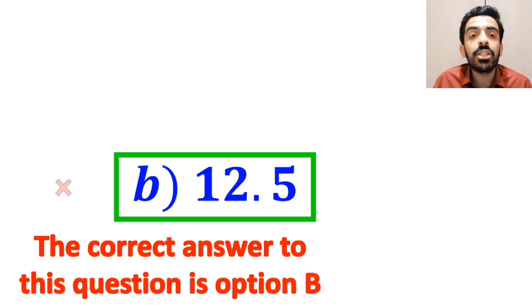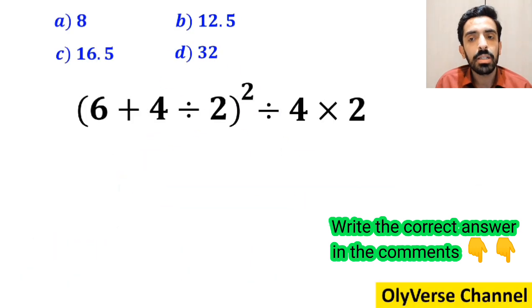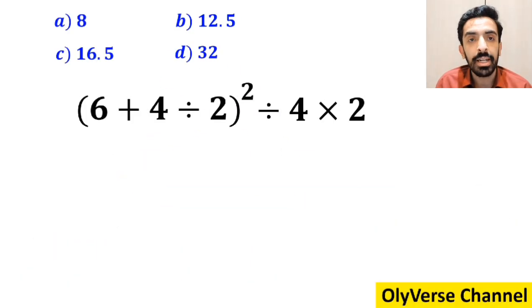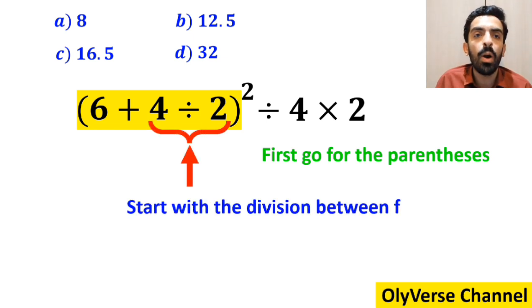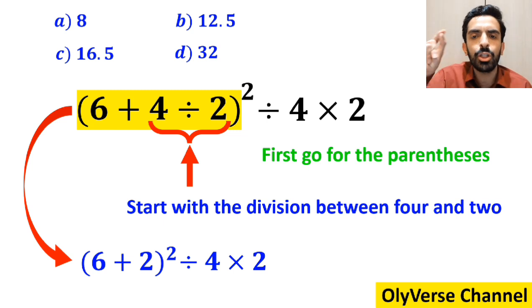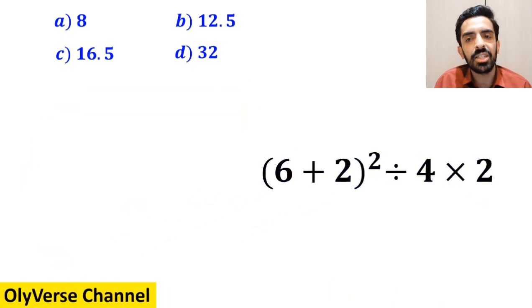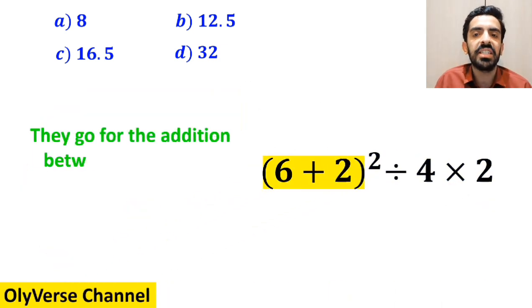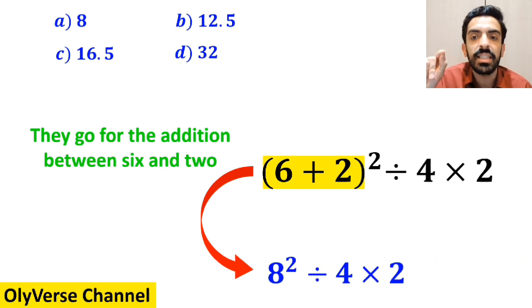But it's not the correct answer. Some other people, to solve this question, first go for the parentheses and start with the division between 4 and 2. So instead of this expression, they write (6 + 2)² ÷ 4 × 2. In the next step, they go for the addition between 6 and 2, and simplify this expression to 8² ÷ 4 × 2.